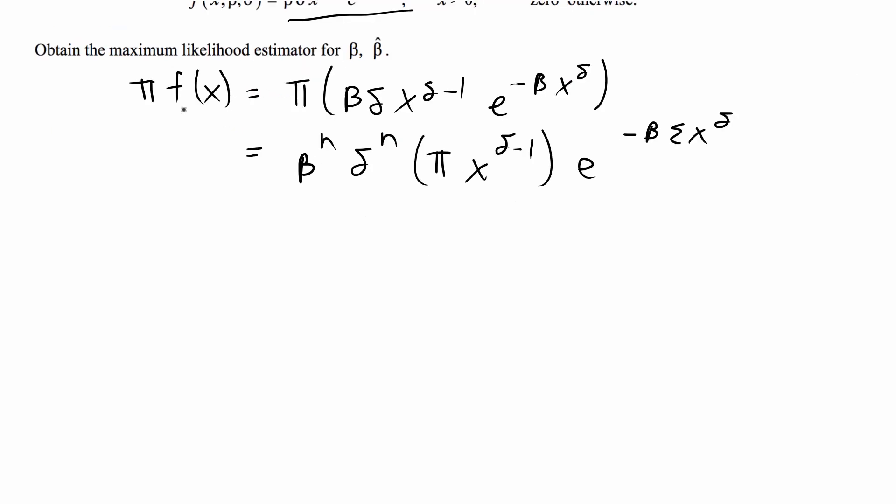Alright, so now that we've done that, the next step is we're going to take the natural log of the likelihood function. I usually just write it like that, and I'm going to combine two steps in one because the natural log of beta to the n is equal to n times the natural log of beta, so I'm just going to go ahead and do those steps together.